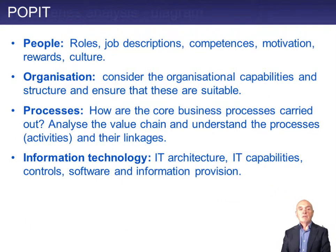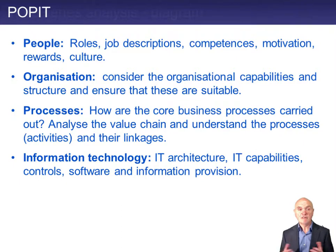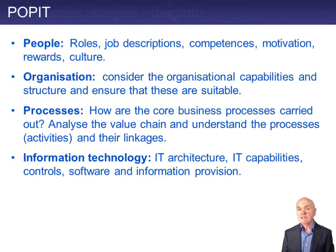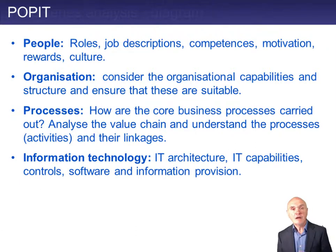One model for considering what needs to change is called the POPIT model, which says the following are all up for change: People — what sort of people do you employ, how many, what skills do they have, how should we reward them, what sort of culture do we need, how do we motivate them, what sort of bonuses? These are all very fundamental to the success of an organisation.